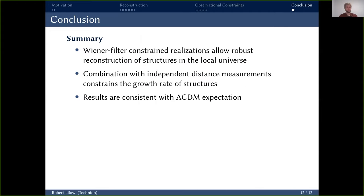With this I want to come to my conclusion. I hope I could show you that you can use constrained realizations based on the Wiener filter to get a robust reconstruction of the structure of the local universe including a very thorough error estimate of this reconstruction. Then how you can combine these reconstructions with an independent set of galaxy distances allowing you to constrain the growth rate of structures, and the results we find for this growth rate parameter are consistent with the Lambda CDM expectation.